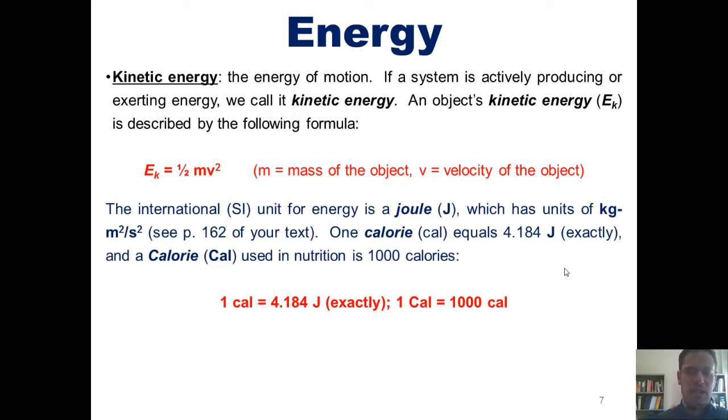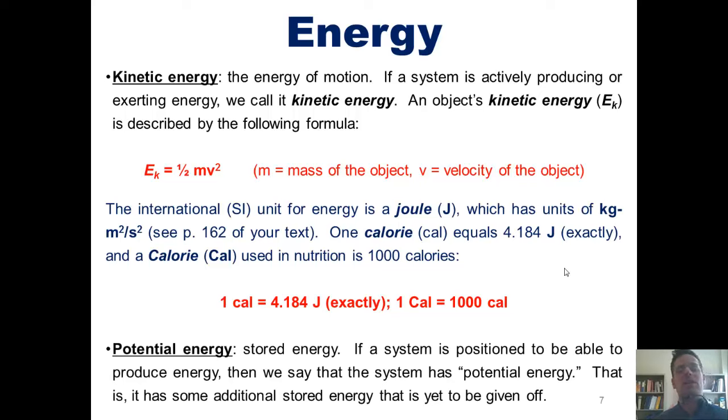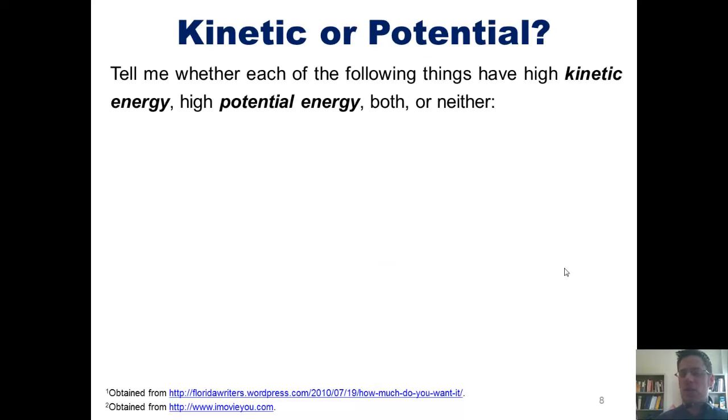The second type of energy is potential energy, which simply defined is stored energy. If a system is positioned to be able to produce energy, but isn't actively exerting it, then we say that that system has potential energy. That is, it has some additional stored energy in it that has yet to be given off. So, let's see if you can figure this out. Are each of these things shown examples of kinetic energy, potential energy, both, or neither?